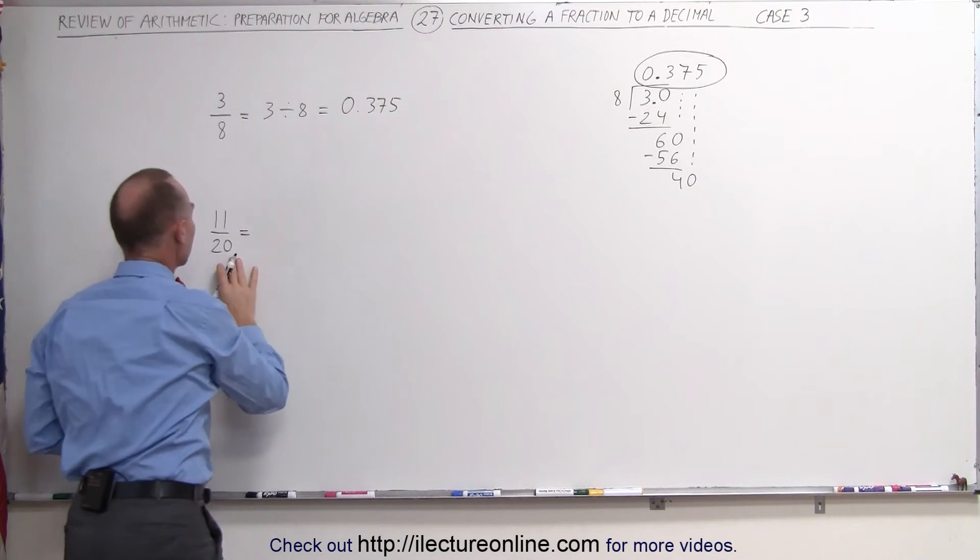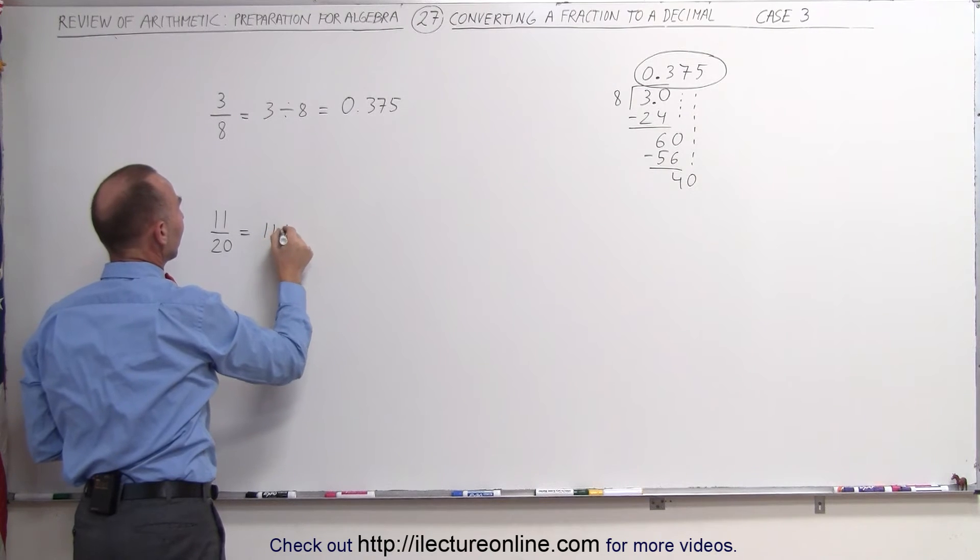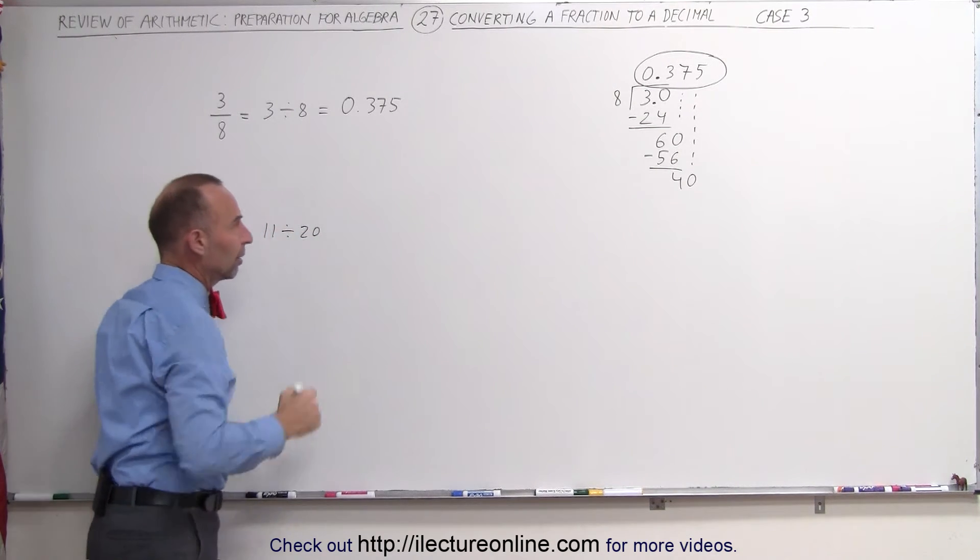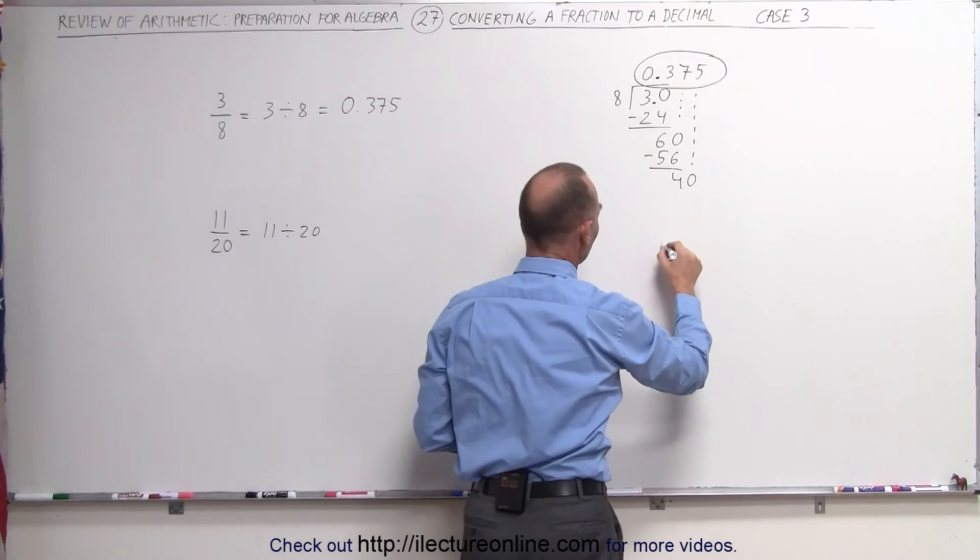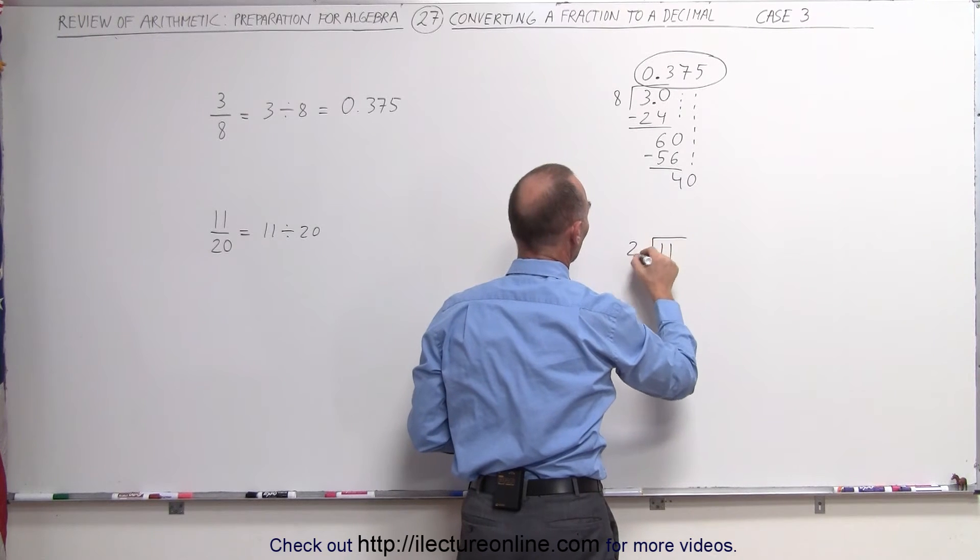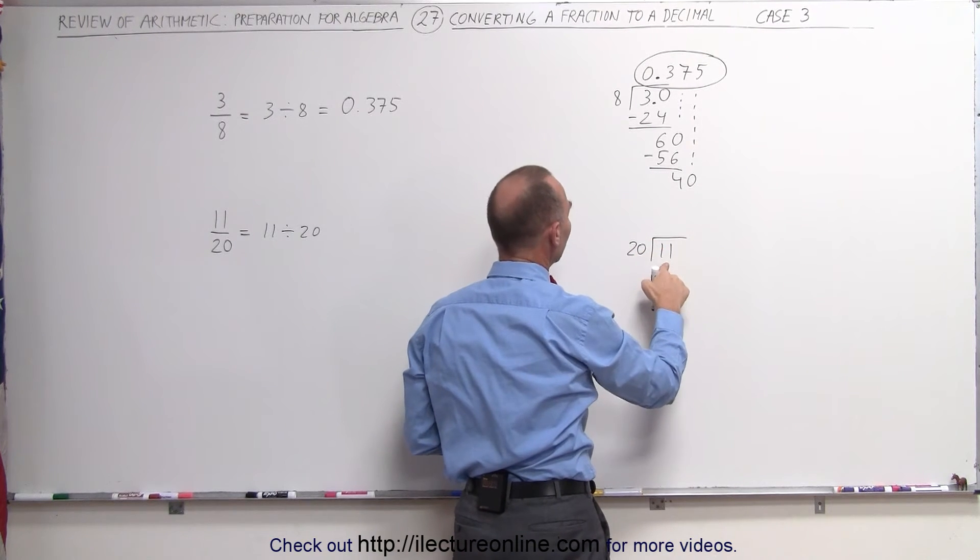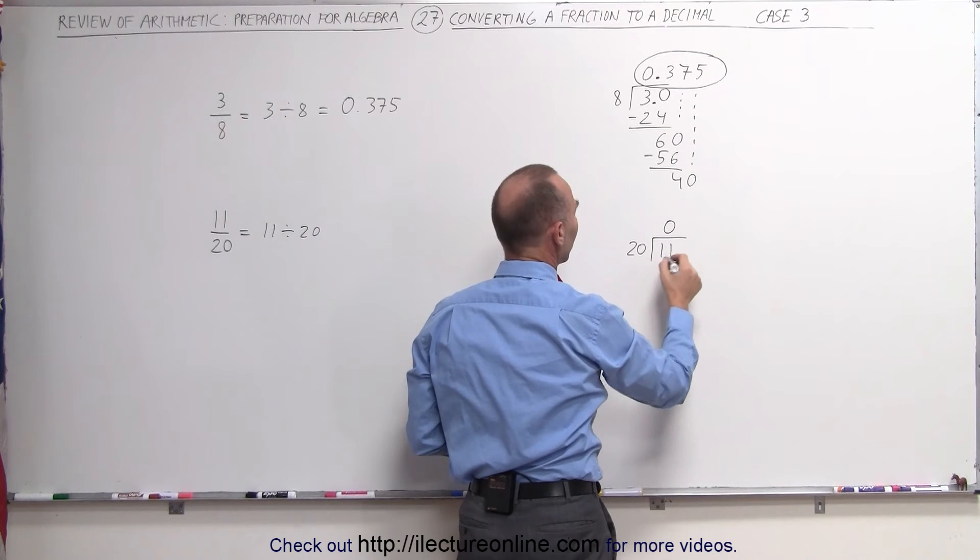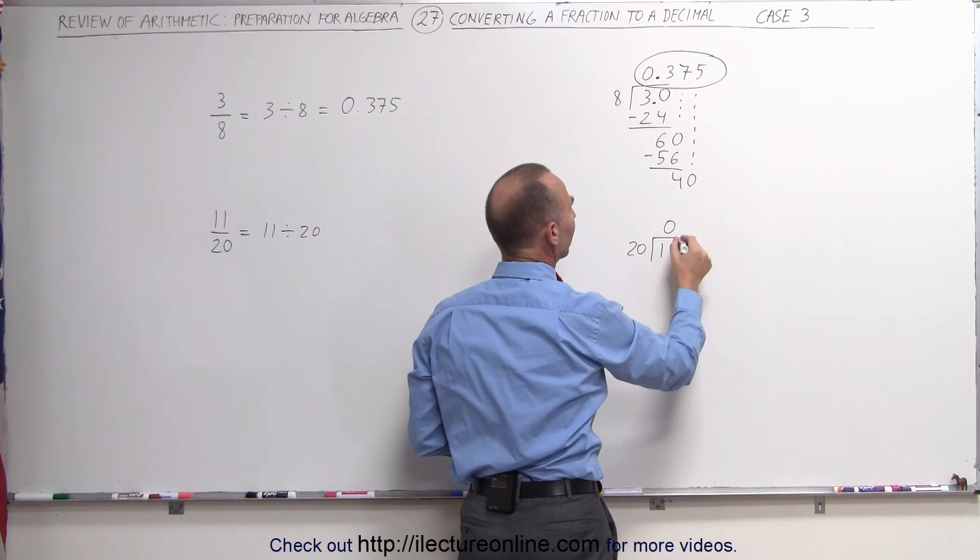Let's do the same with this number here. This really means that we have 11 divided by 20, so that's what we're going to do over here. We're going to take the number 11 and divide it by 20. Now 20 goes into 11, 0 times, so we know that we have a decimal place there. Now we add a 0.